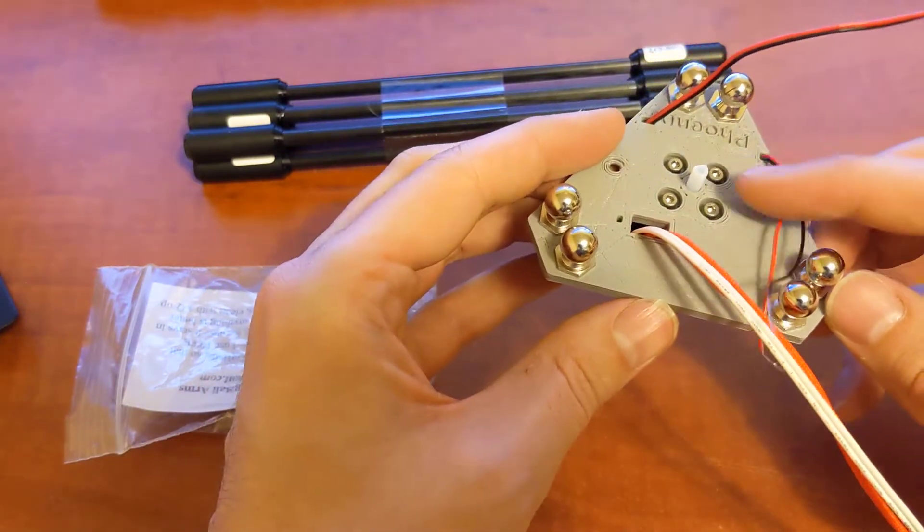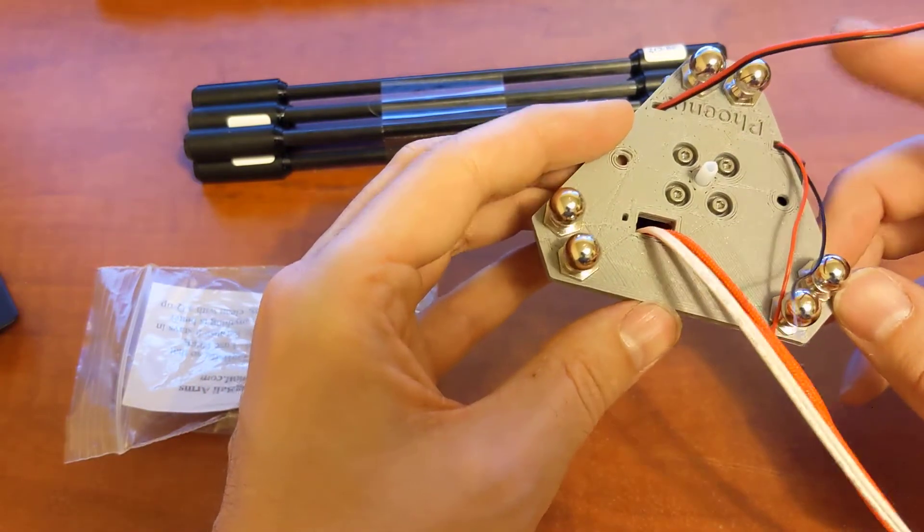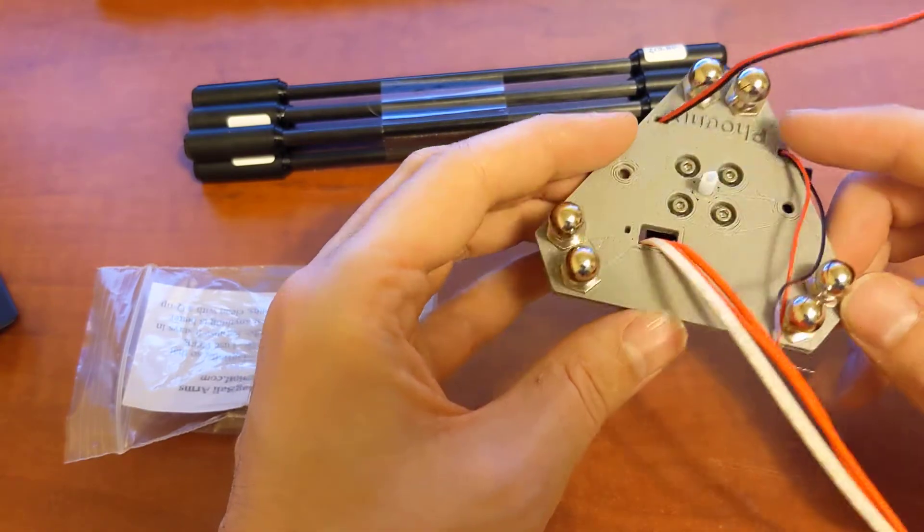So you kind of unfortunately have to use that hot end for this effector, or you can take the STL of this effector and just make your own for a groove mount, but it works quite well.